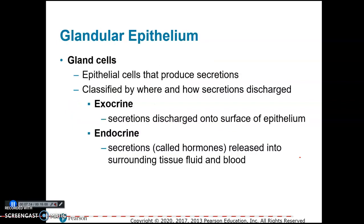Gland cells are epithelial cells that produce secretions. They are classified as either exocrine or endocrine. In exocrine glands, like sweat glands and oil glands, secretions are discharged onto the surface of the epithelium. In endocrine glands, secretions are released into tissue fluid and blood, and those secretions are called hormones.